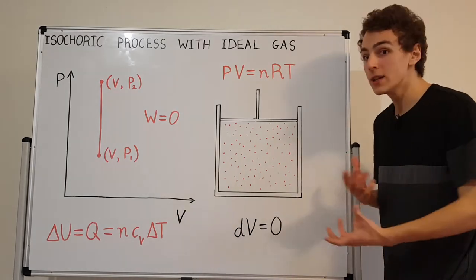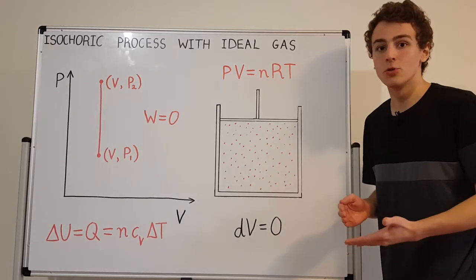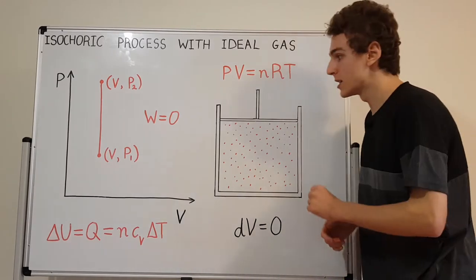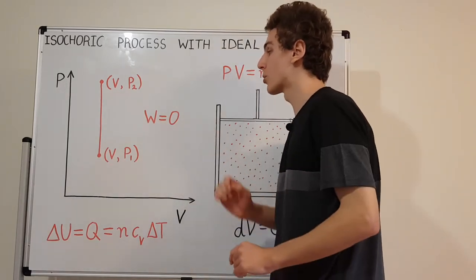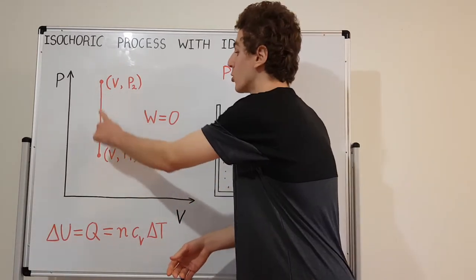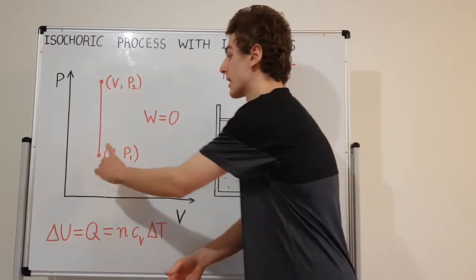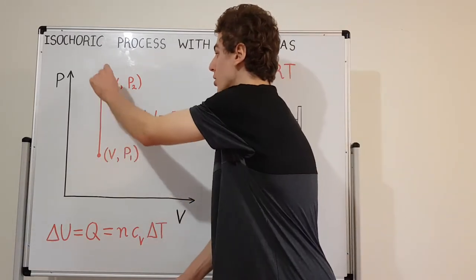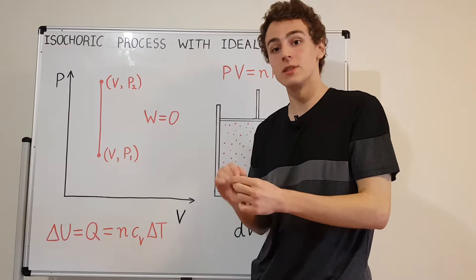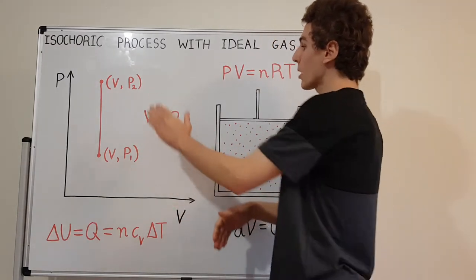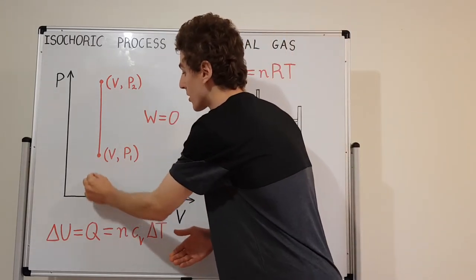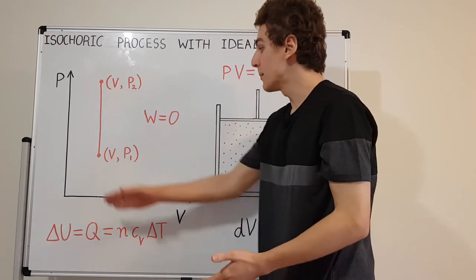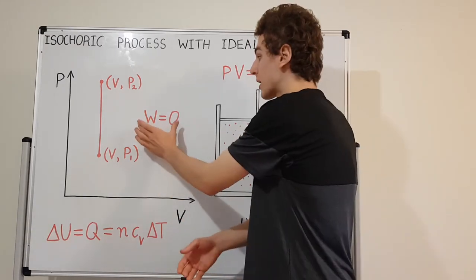Let's have a look at some of the quantities we can talk about for isochoric processes — specifically the internal energy, the heat, and the work, which are linked together by the first law of thermodynamics. If we represent the isochoric process on a P-V diagram, it looks like a vertical line. Isochoric heating is a line with an upwards arrow — starting at the bottom and moving upwards. Isochoric cooling starts at the top and moves down. A very important feature of this diagram is that the area under the curve is zero, since there's no horizontal component. Because the area under the curve corresponds to work, the work W is zero.